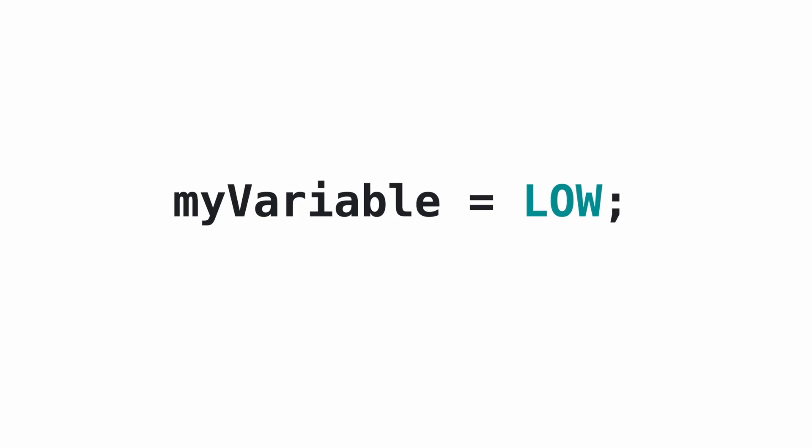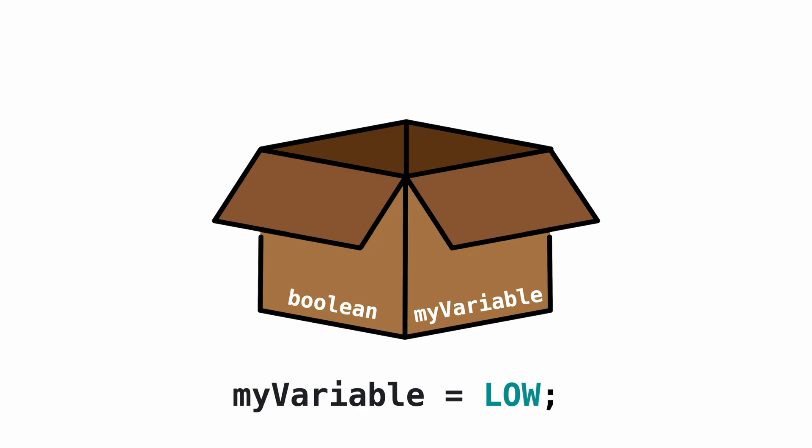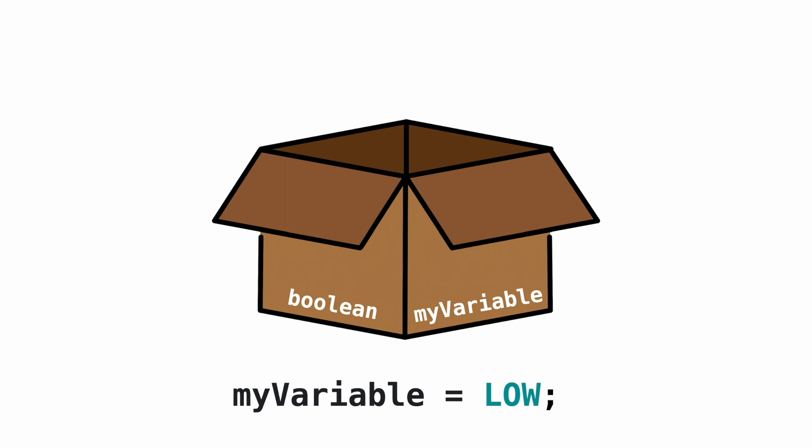Our variable has the value HIGH, and now I try to assign LOW. What happens is Arduino searches the box with the name myVariable, grabs whatever is inside the box, destroys it, and puts in a new value.